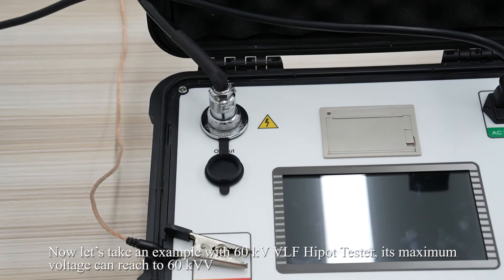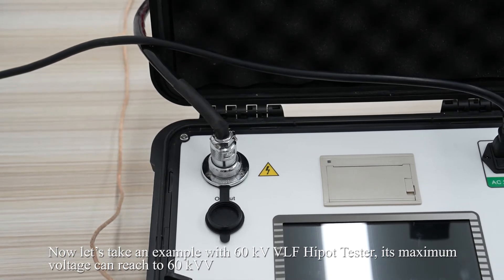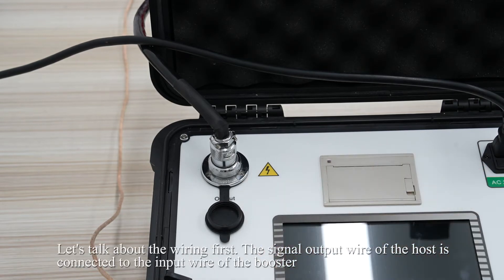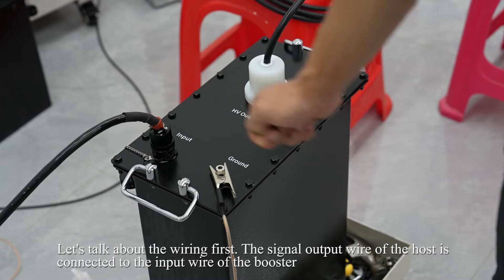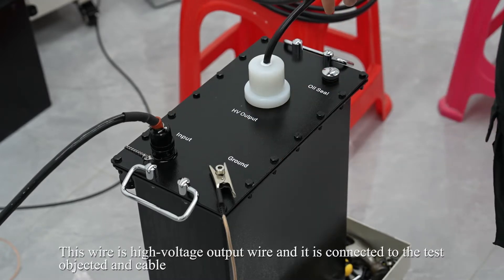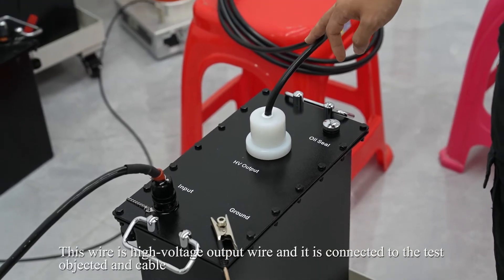Now let's take an example with 60KV ultra-low-frequency hipot tester. Its maximum voltage can reach 60KV. Let's talk about the wiring first. The signal output wire of the host is connected to the input wire of the booster. This wire is high-voltage output wire and is connected to the test object and our cable.